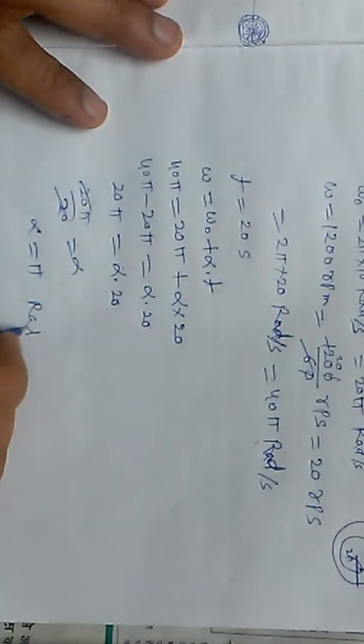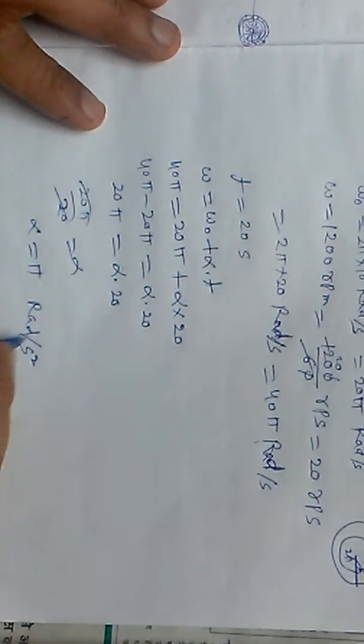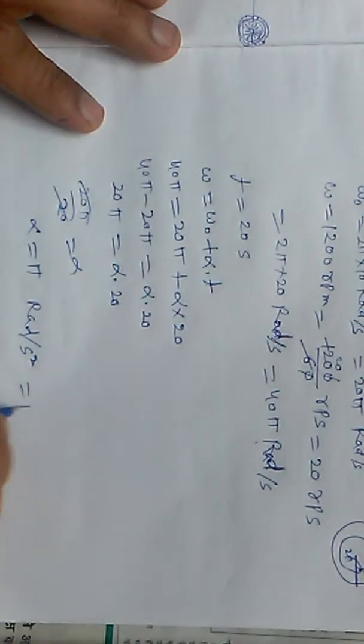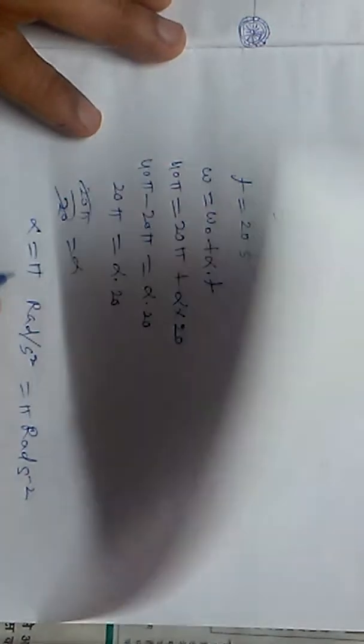Alpha equals pi radians per second squared. That's our angular acceleration. Now for the second part.